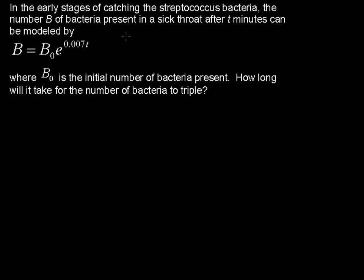In the early stages of catching the Streptococcus bacteria, the number B of bacteria present in a sick throat after T minutes can be modeled by B equals B sub 0 times E to the 0.007T, where B sub 0 is the initial number of bacteria present. How long will it take for the number of bacteria to triple?